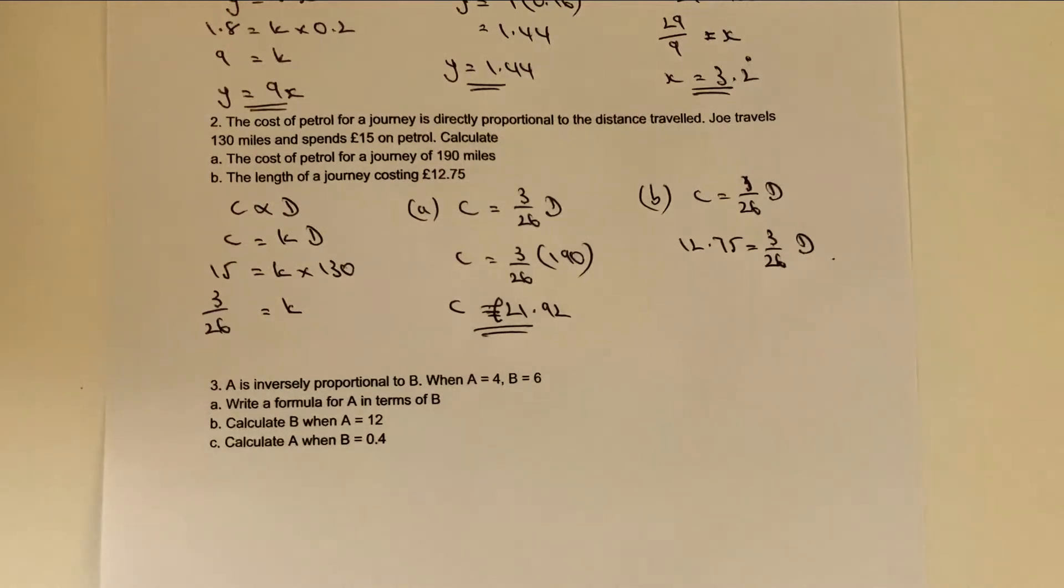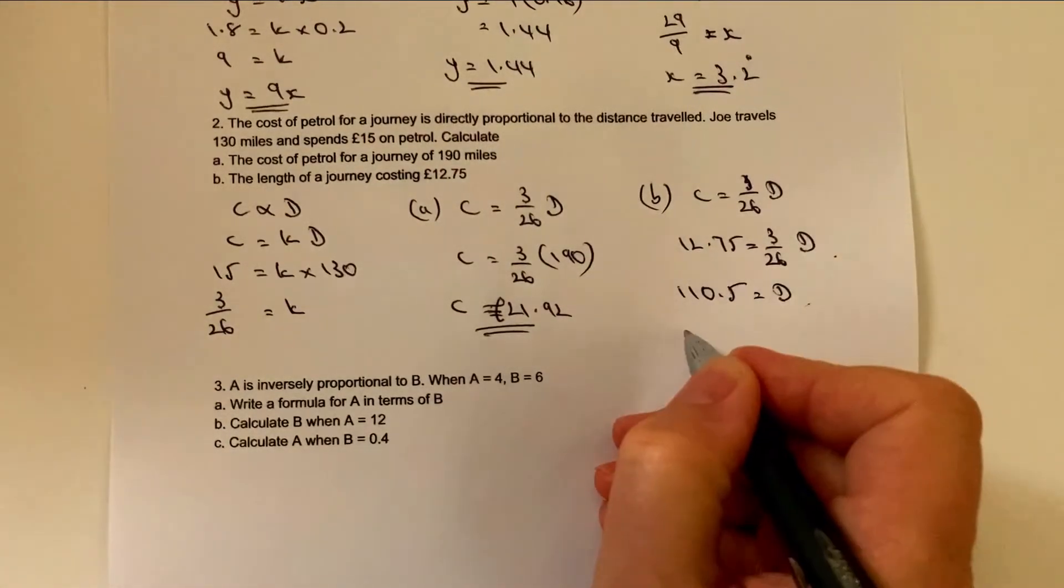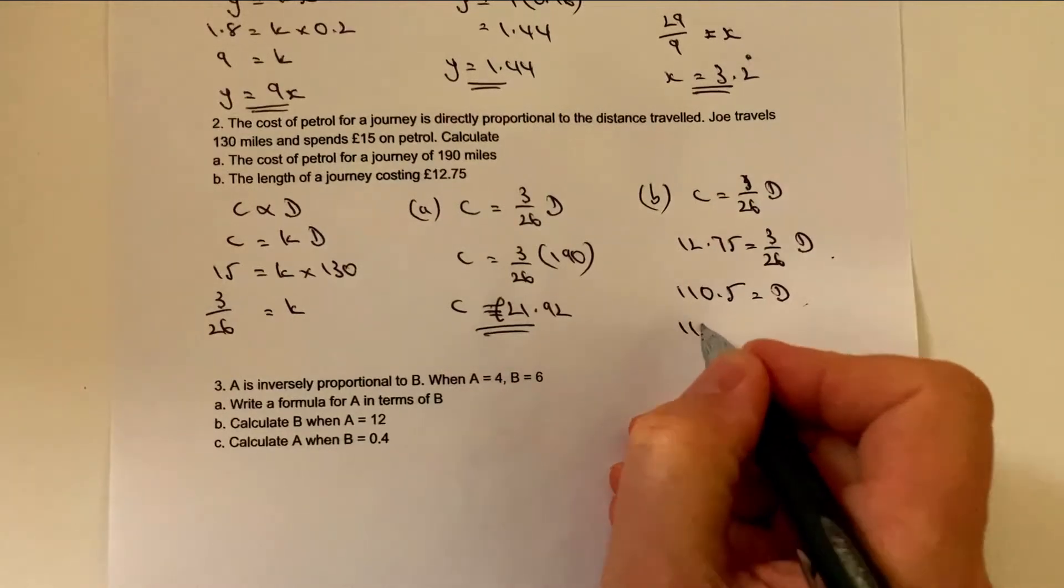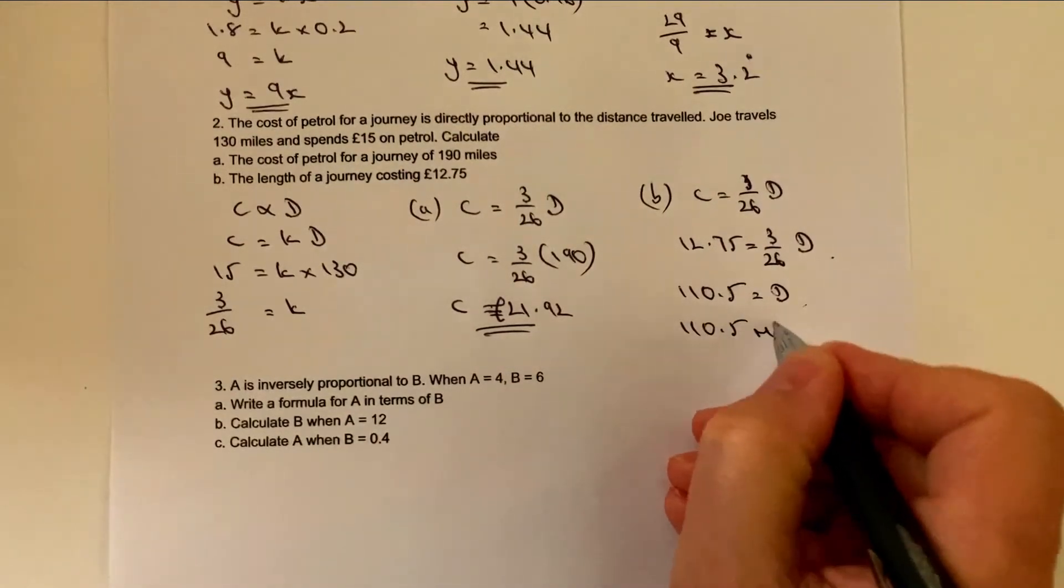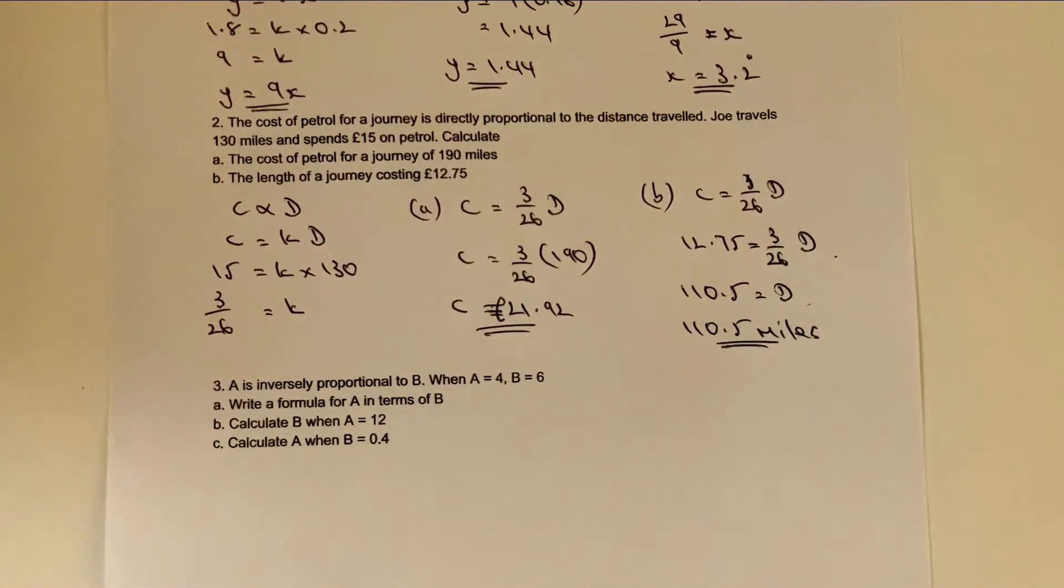If you use the fraction key in the calculator, you should be able to do that in one go. It takes a little bit of practice, but you should be OK with it. If you're not sure, add a comment below and I'll put some information in the comments. When we've divided through, however, we should get 110.5 equals d. So therefore it's going to be 110.5 miles.